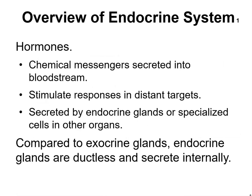An overview of the endocrine system: hormones are chemical messengers secreted into the bloodstream that stimulate responses in distant targets. They are secreted by endocrine glands or specialized cells in other organs. Compared to exocrine glands, endocrine glands are ductless and secrete internally.